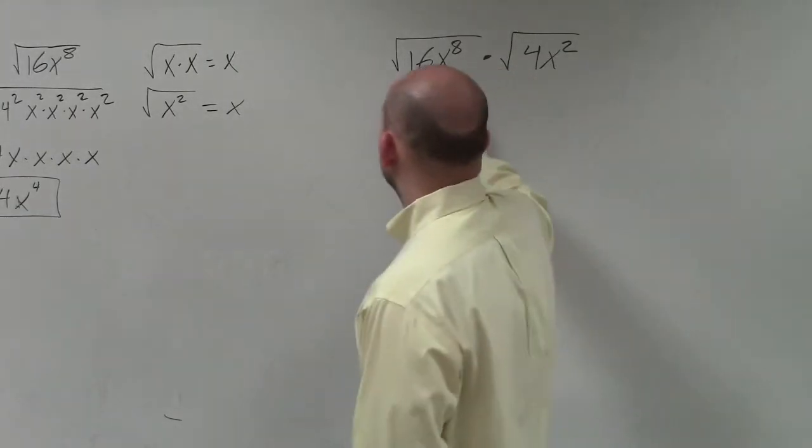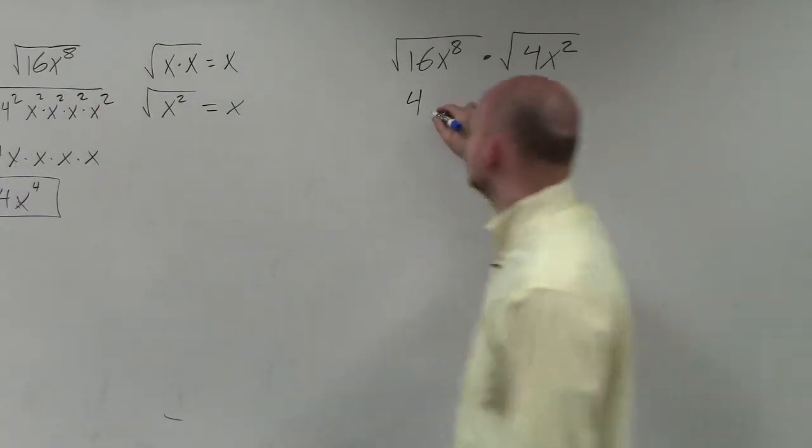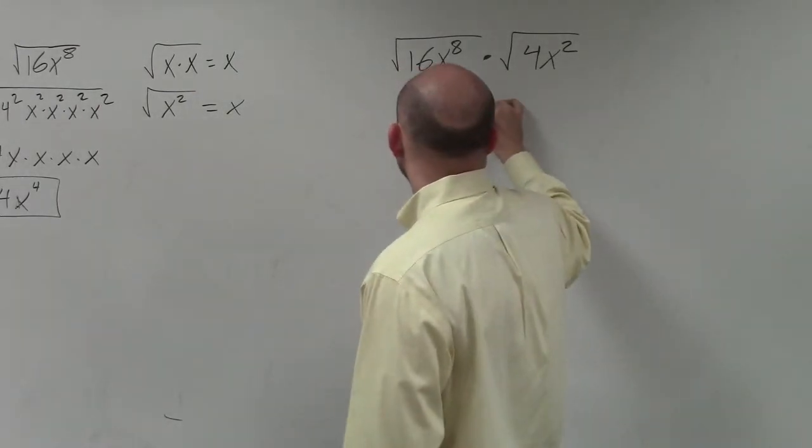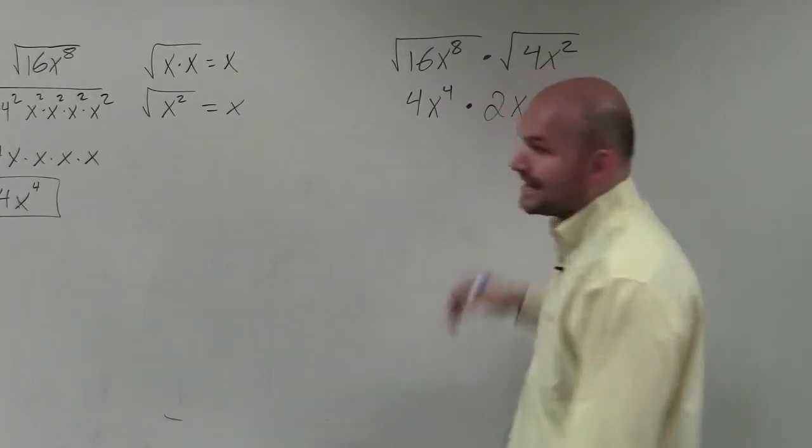The square root of 16 is 4. What number multiplied by itself is going to give you x to the eighth? We figured that was x to the fourth. And then I have times what is the square root of 4, which is 2, and the square root of x squared is x.